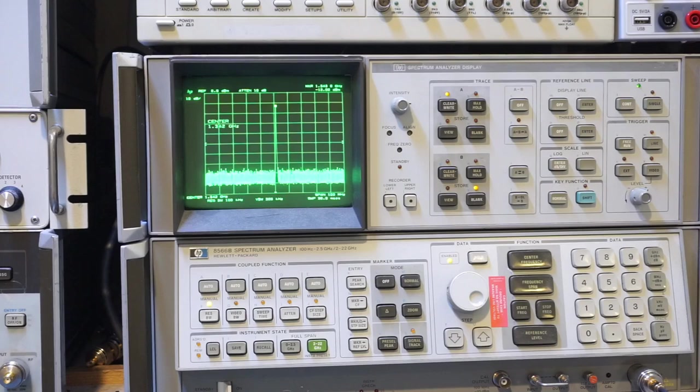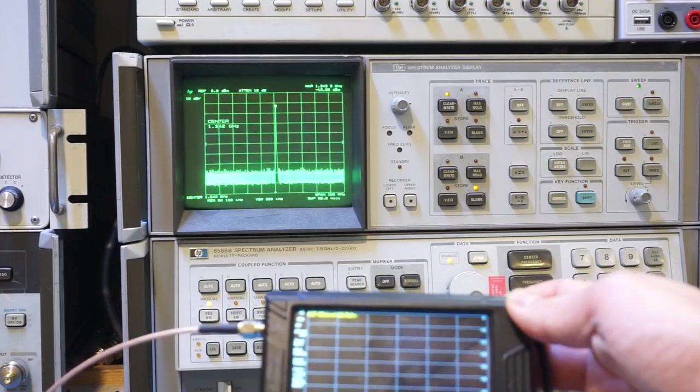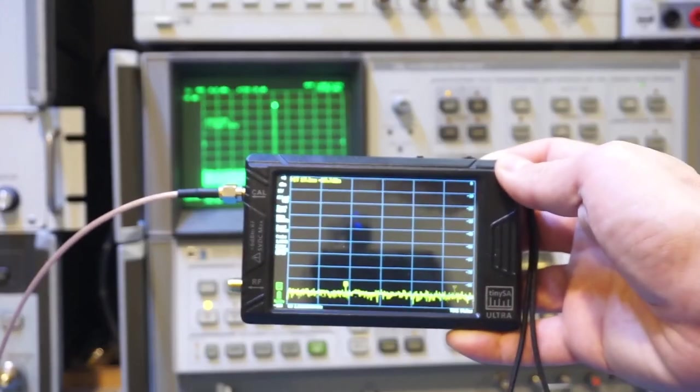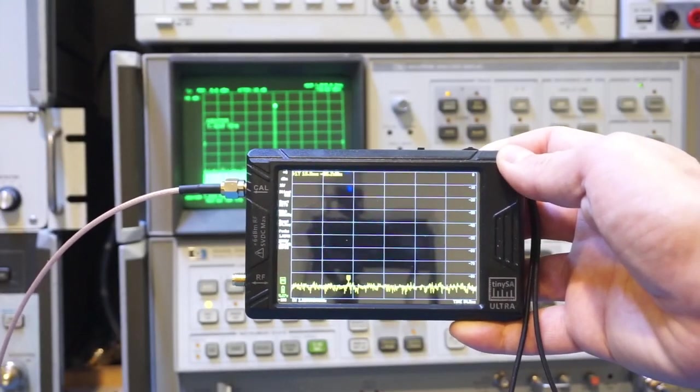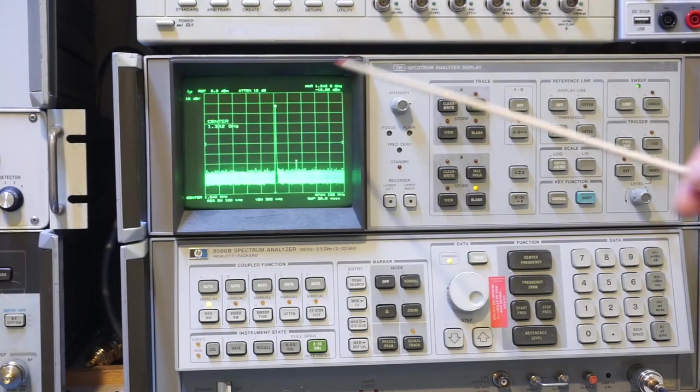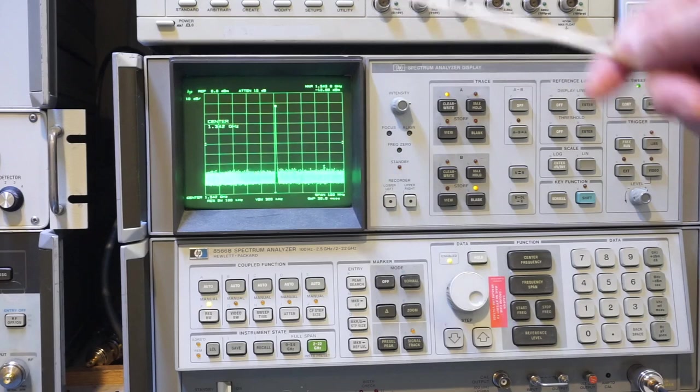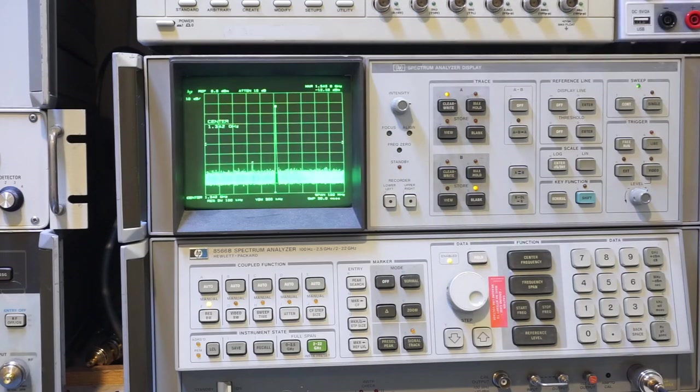So this behavior is actually not documented anywhere on TinySA's website. Also, you notice that the LO level is currently at minus 10 dBm thereabout, which will drop significantly after 5 GHz or so. So this will affect tracking generator's dynamic range.